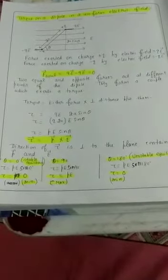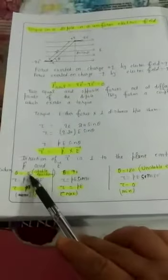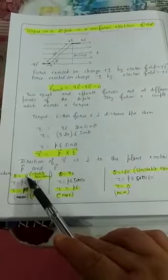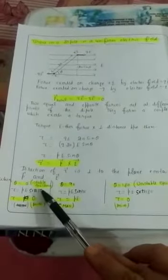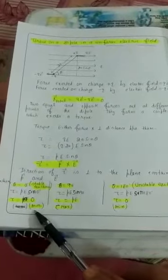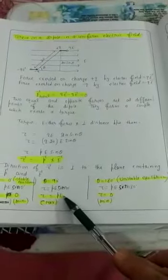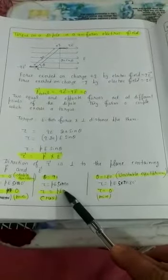There are three special cases according to the value of angle theta. When theta is 0 degrees, the dipole is parallel to the electric field — this is known as stable equilibrium. Here, torque becomes PE sine 0, and since sine 0 equals 0, the torque is minimum. When theta is 90 degrees, the dipole is perpendicular to the electric field. Torque is PE sine 90, and since sine 90 equals 1, the maximum torque PE is produced.